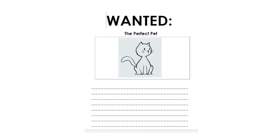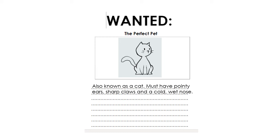That's my drawing — the best I could do. I'm sure yours are wonderful. Once you've got your picture of a cat on the advert, the next job is to write some sentences. I've started my sentences: it says Wanted the Perfect Pet at the top, then also known as a cat. I've got my capital letter, finger spaces, and full stop. Then I've started to tell you some of the things a cat must have — must have pointy ears, sharp claws, and a cold wet nose. I've used the ideas from my picture and labels, so you can do exactly the same.